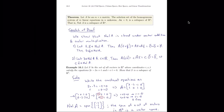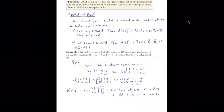We would have known this already because we could show the null space of A is the span of the set of solutions to Ax equals zero. If we can write a set as a span, we automatically know it's a subspace. That might be harder to write abstractly, but it would have been another way to prove this. Nonetheless, this is great practice for the technique of showing something is a subspace.